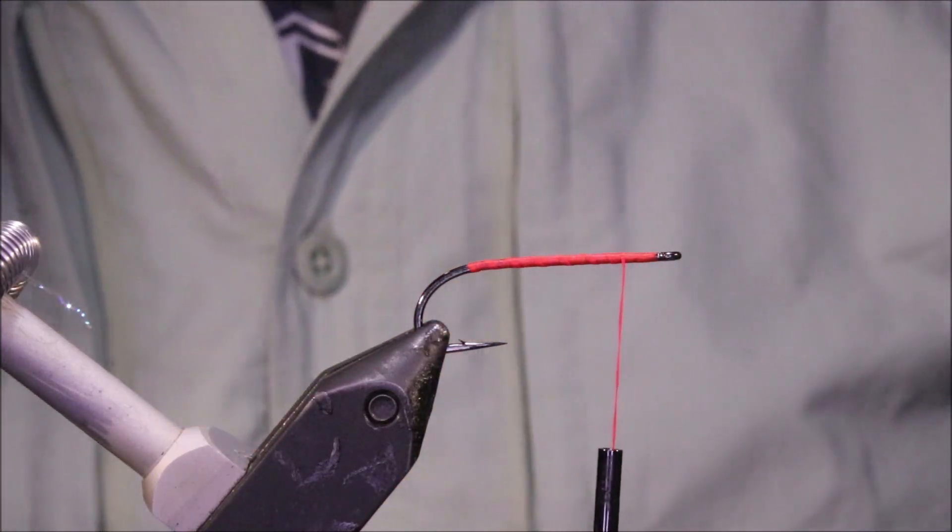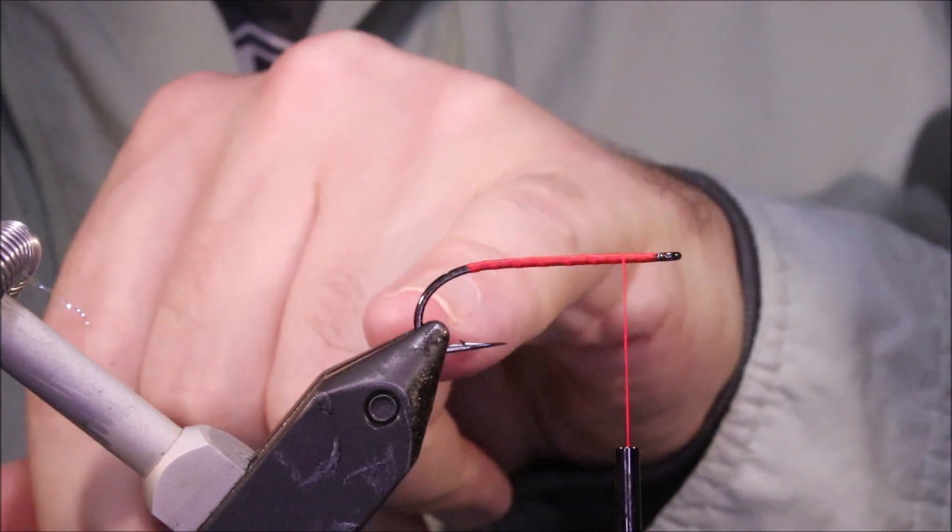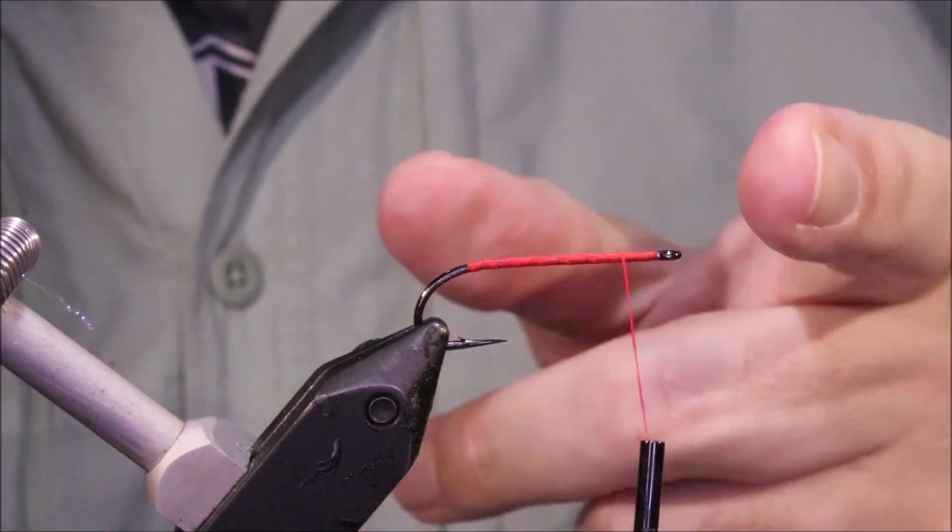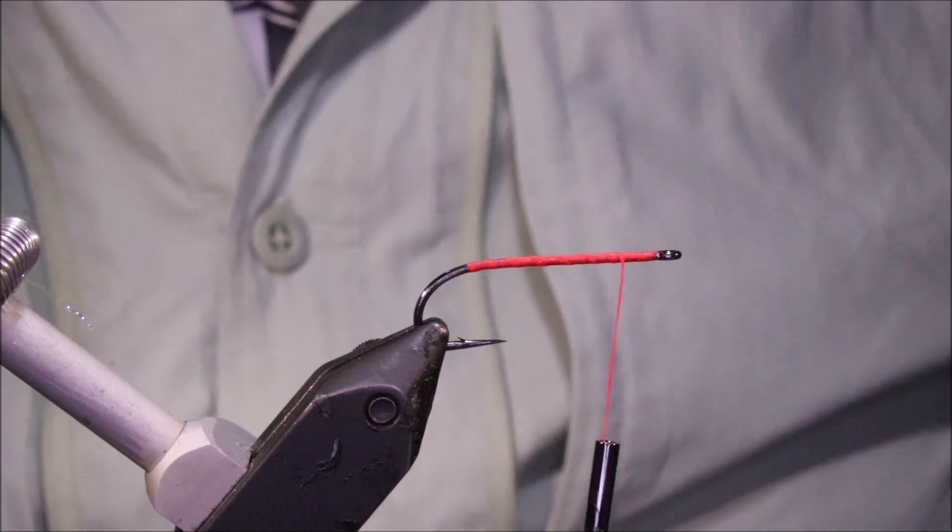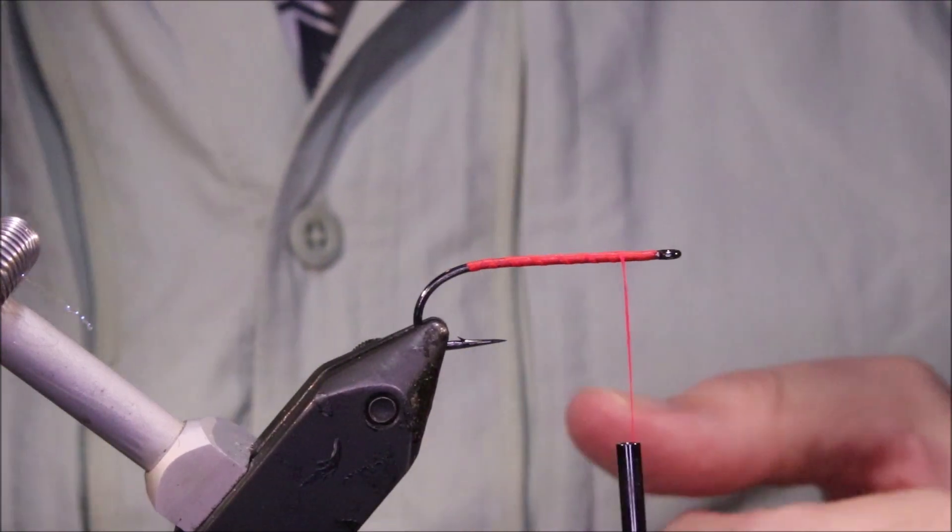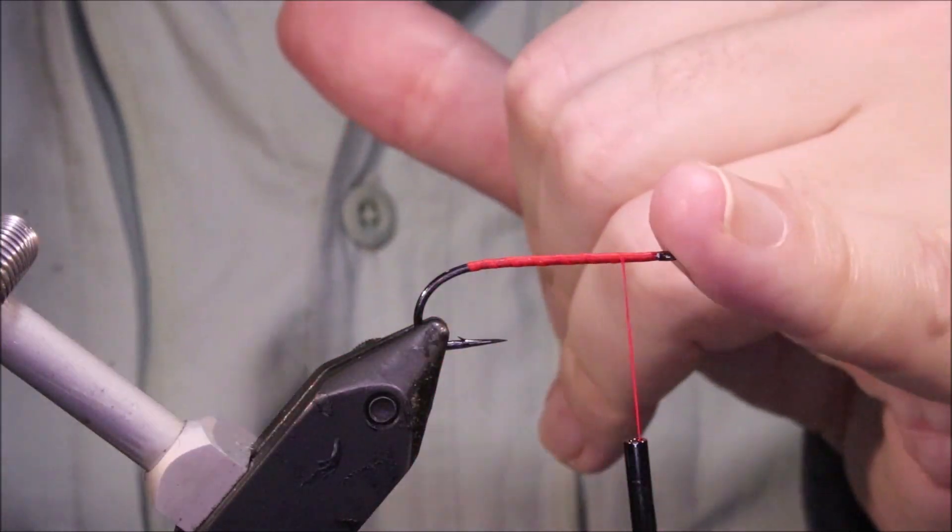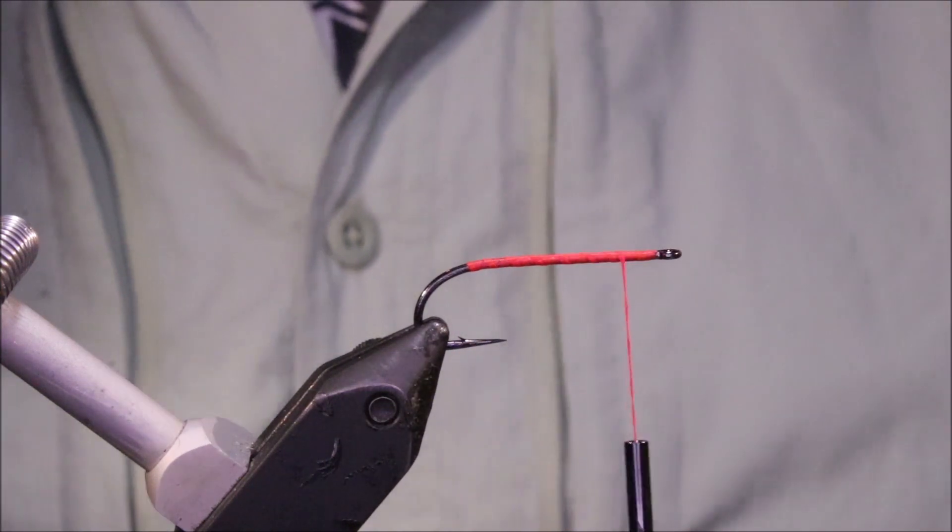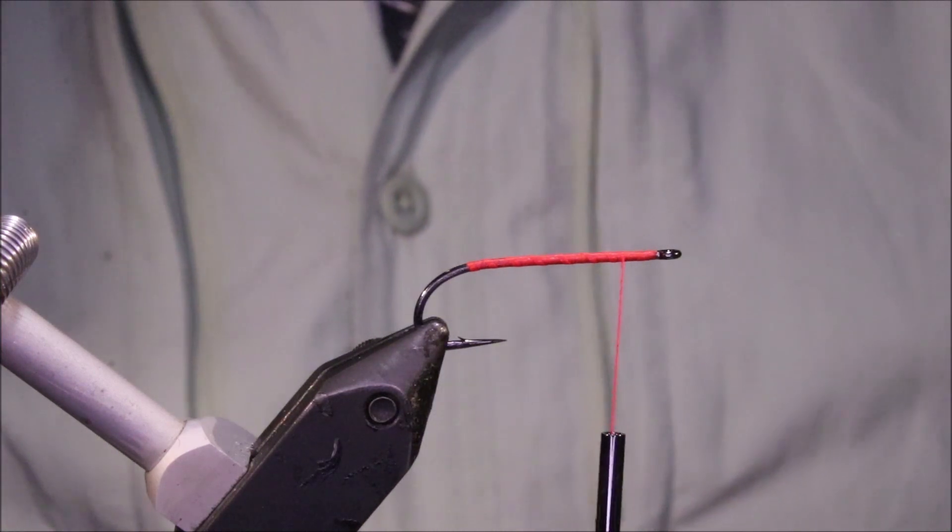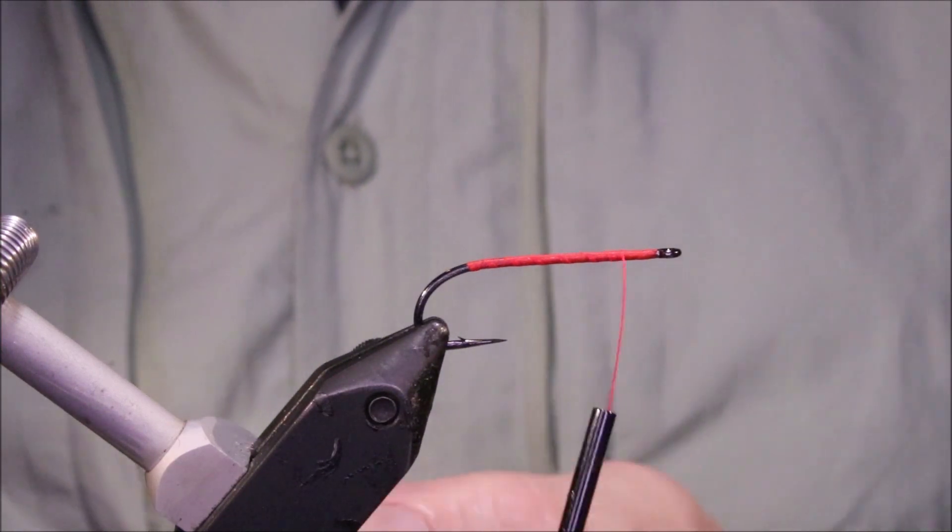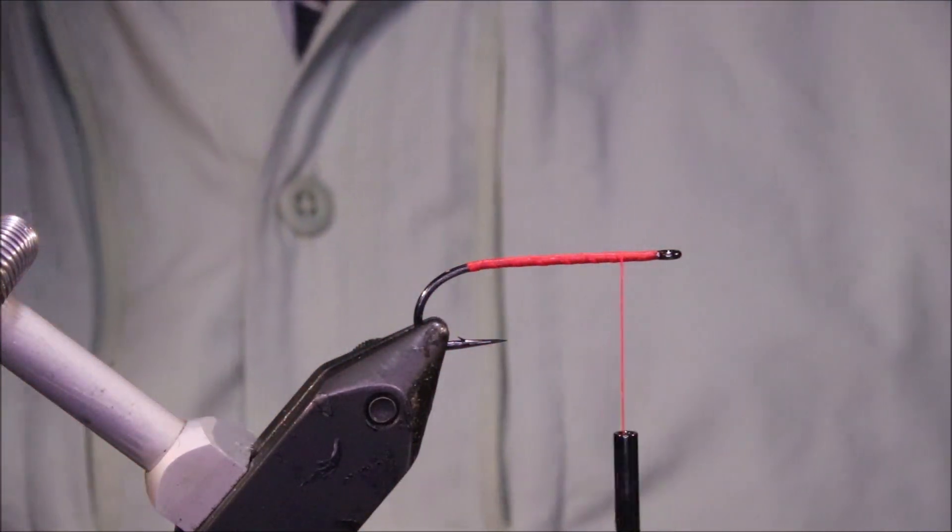So I've got my hook in my vise. This is a size 8 Tiemco 777 SP. These are getting quite hard to get for some reason, but the hook choice is not really that important. Any sort of 2x long saltwater safe streamer hook will do. You know, anything from Ahrex or the Partridge series like the Attitudes or the Trout Predator streamer, they're all fine. And you can tie them, say a size 1 down to about a 10 and they'll work quite well.